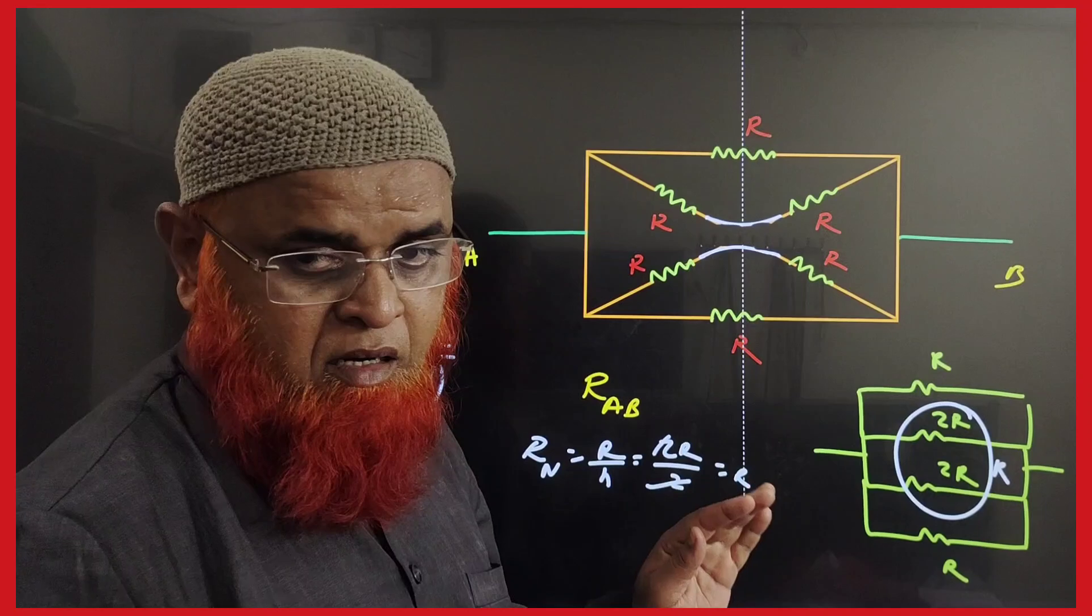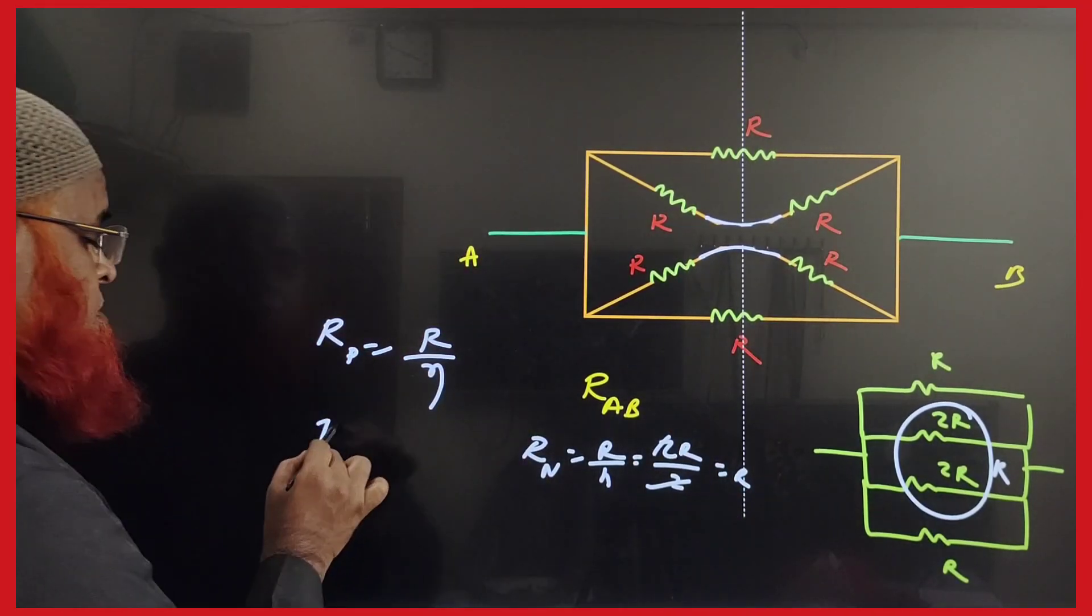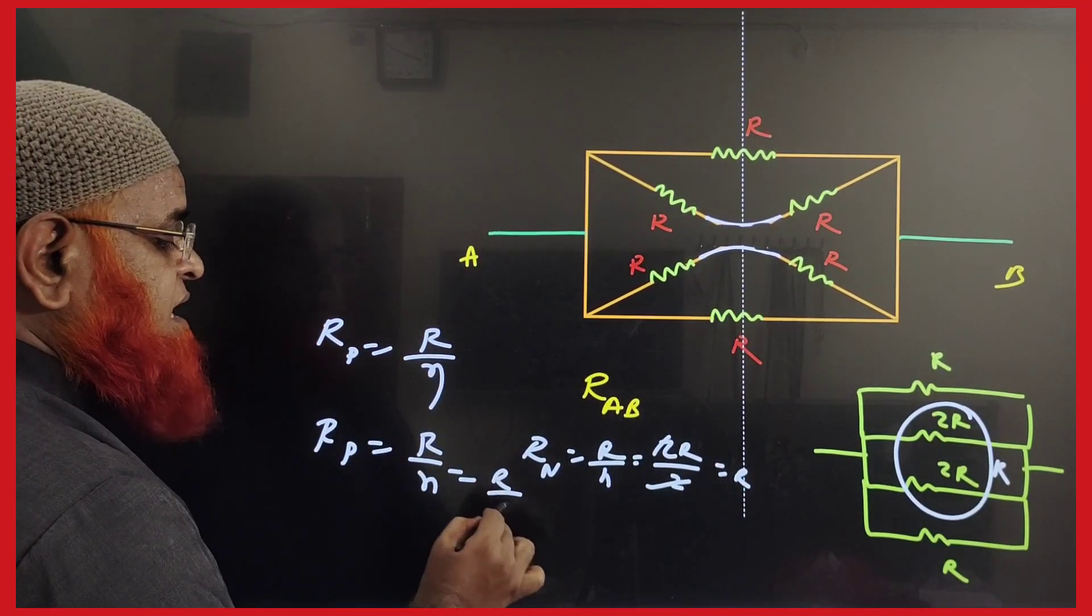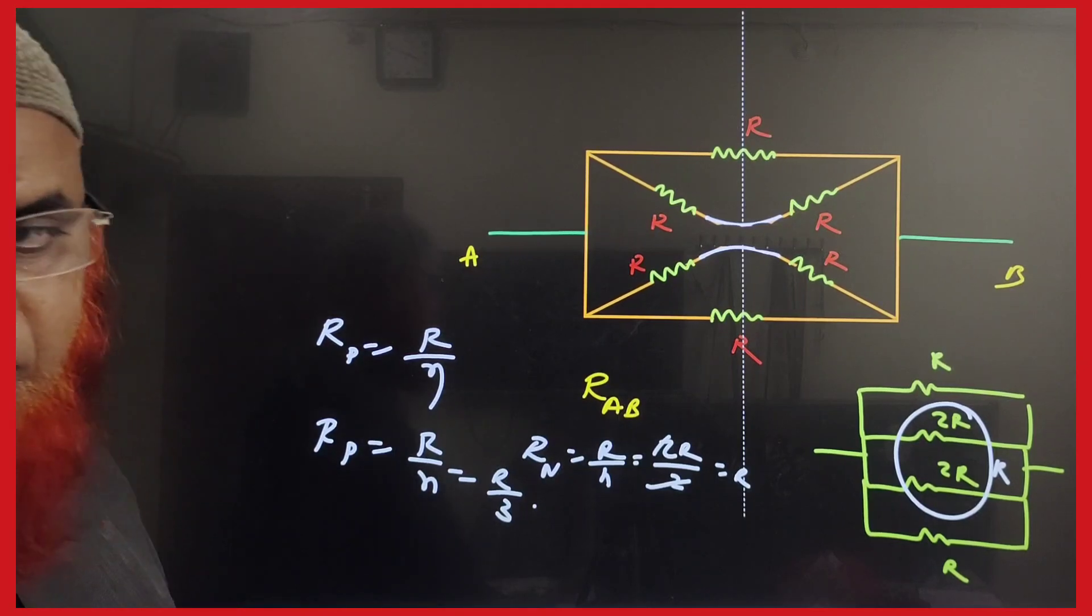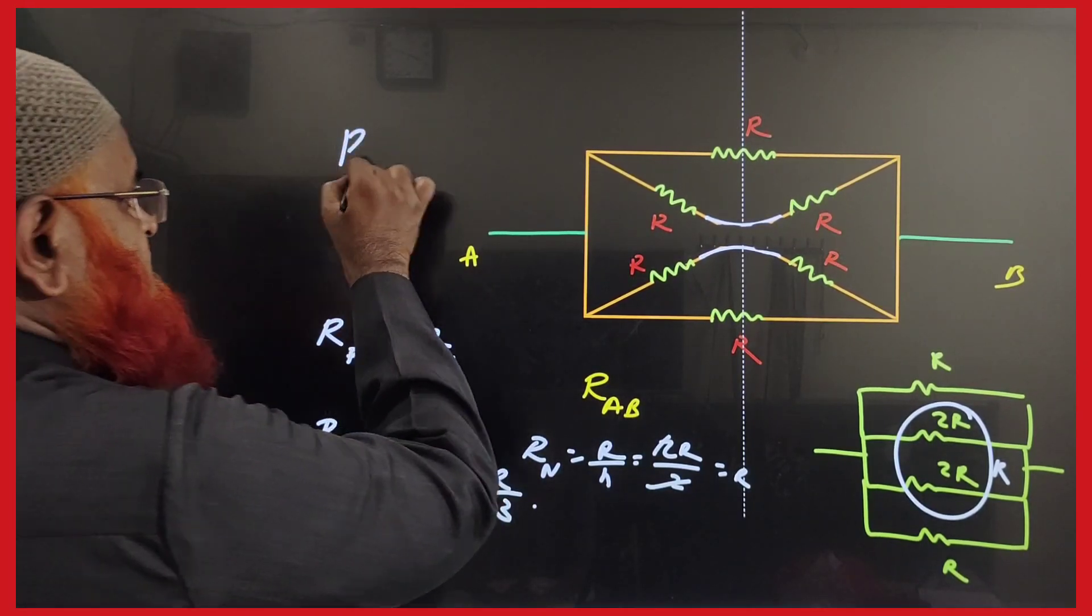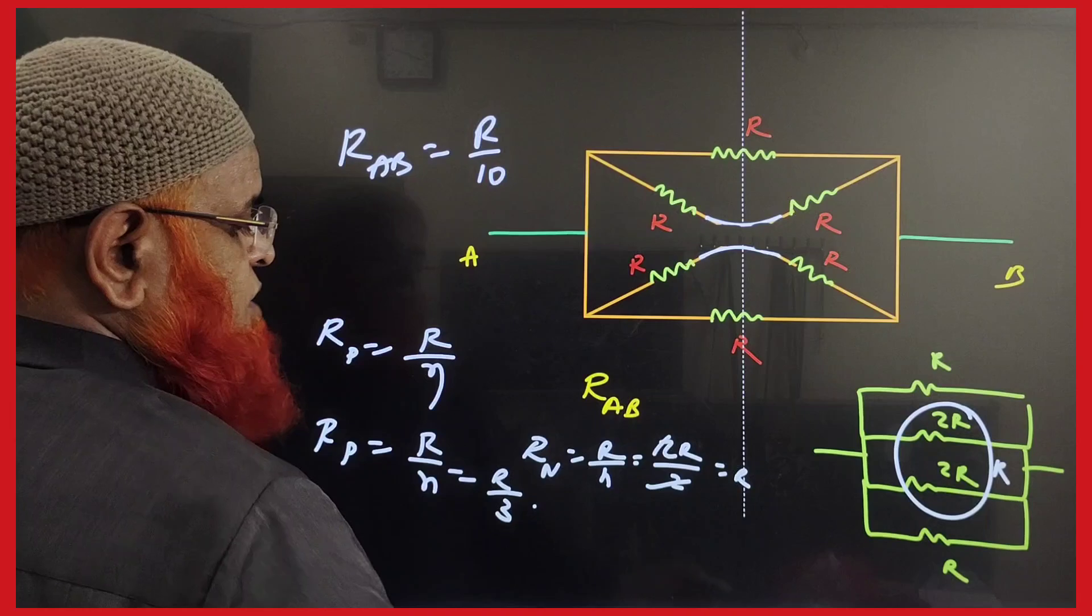R, R parallel. So according to the same formula, R parallel is going to become R by N, which is R by 3. So your formula for this case is R across AB equals R by 3.